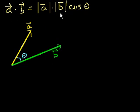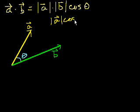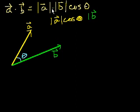So there's two ways of viewing this product. You could view it as vector a — because multiplication is associative, you could switch the order — so this could also be written as the magnitude of vector a times cosine of theta times the magnitude of vector b. This times isn't the dot product; this is just regular multiplication, because these are all scalar quantities. When you see the dot between vectors, you're talking about the vector dot product.